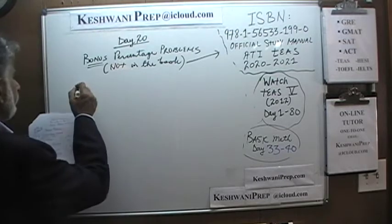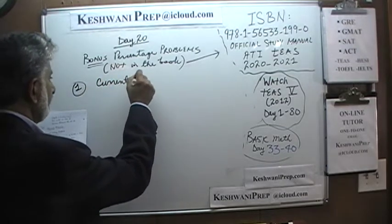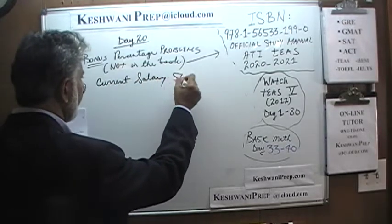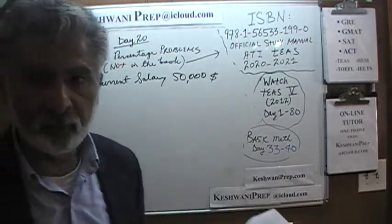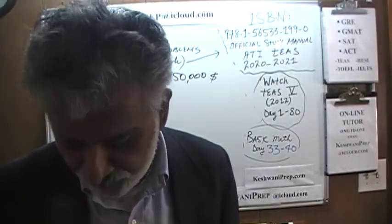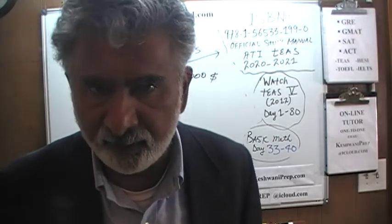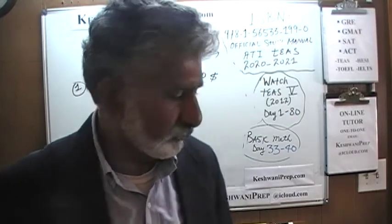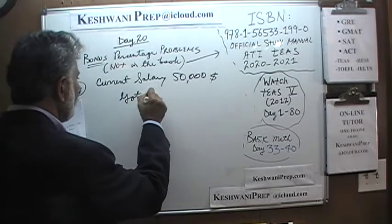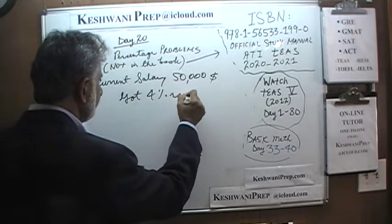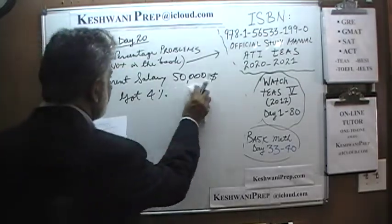Number 1. It says that our current salary is $50,000. These three problems are going to be very similar to what we just finished yesterday — the five problems on page 159 — because it is the exact same exam, written by the exact same people, just the older edition. So we have a $50,000 salary and we are told that we got a 4% raise. The question simply is: what is our new salary?